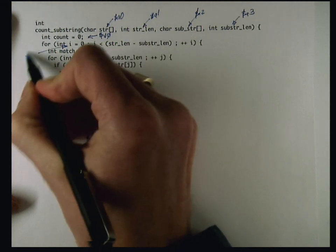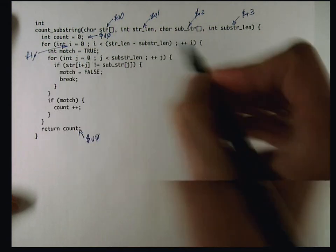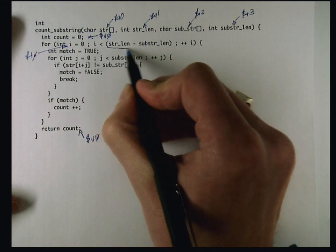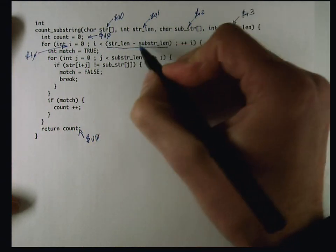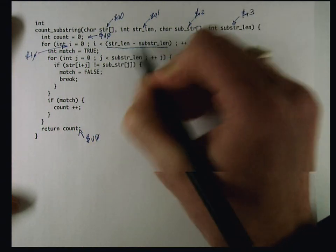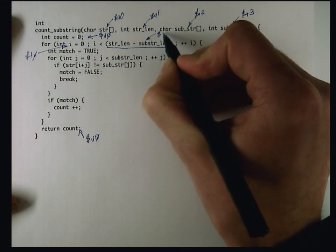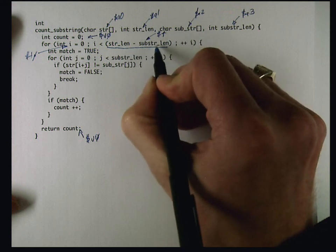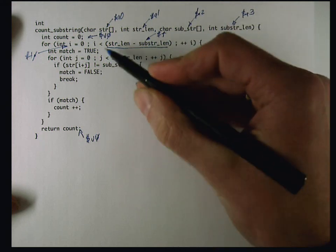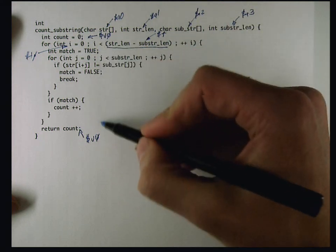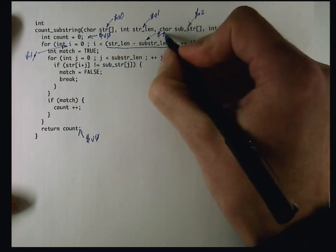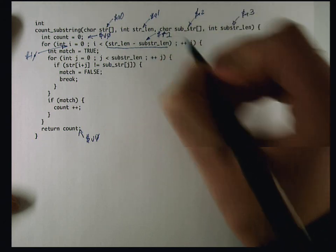I'll allocate I into register T0. I notice that the bound of this loop is something I have to compute, and rather than compute it every time I go around the loop, I'm going to try to compute it once because string length and substring length don't change in the body of the function. So I'm going to compute that once and store that into T1.